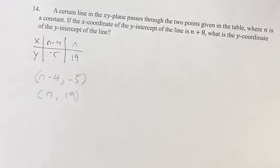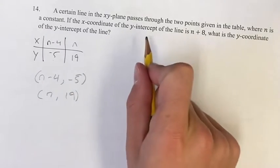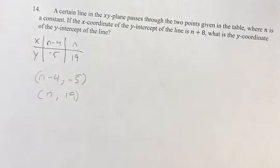Where n is a constant, and we're given the x-coordinate of the y-intercept is n+8. So what is the x-coordinate of any y-intercept? Well, it's actually 0 if you think about it, right?